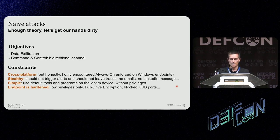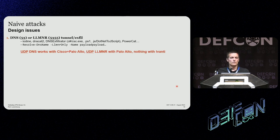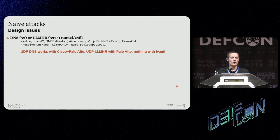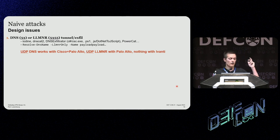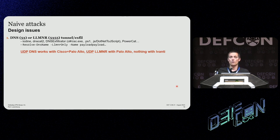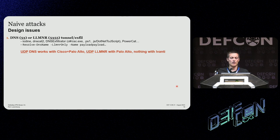The VPN agent still needs DNS to work — it's the only way to get the IP address of the VPN gateway. So naively, we can think about using DNS ourselves to establish some tunnel. And indeed, it works — we can simply use PowerShell, which is capable of doing DNS on LLMNR. The conclusion for this naive attack: it will work for Cisco and Palo Alto. UDP LLMNR will work with Palo Alto only. With Eventy, nothing works — it's not possible to establish a tunnel or send data over DNS.